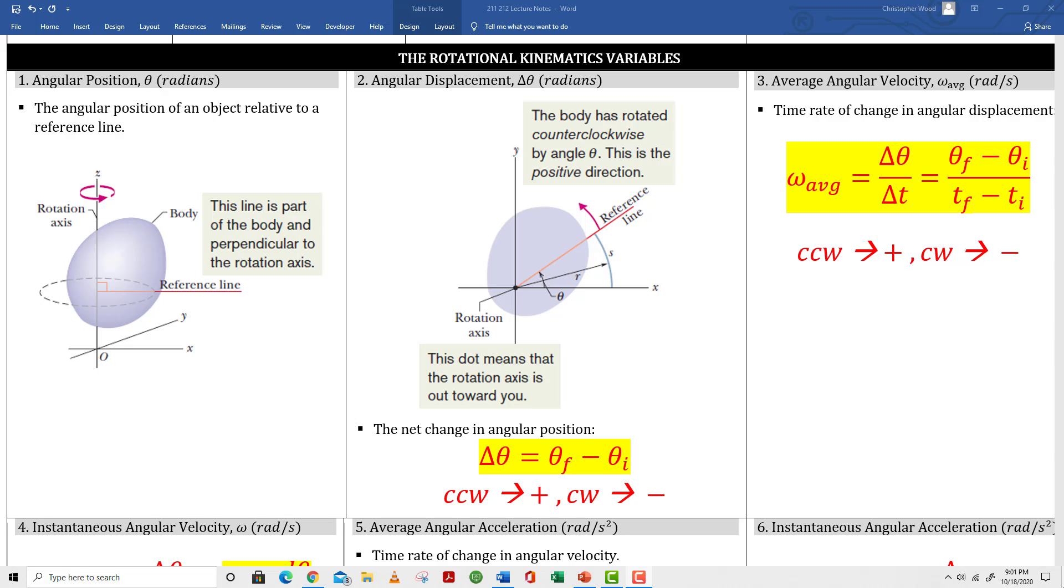This egg-shaped object is meant to represent an arbitrary shaped solid body. So in boxes 1, 2, and 3 study the definition of angular position, angular displacement, and average angular velocity. These correspond to position, displacement, and average velocity in the linear world.